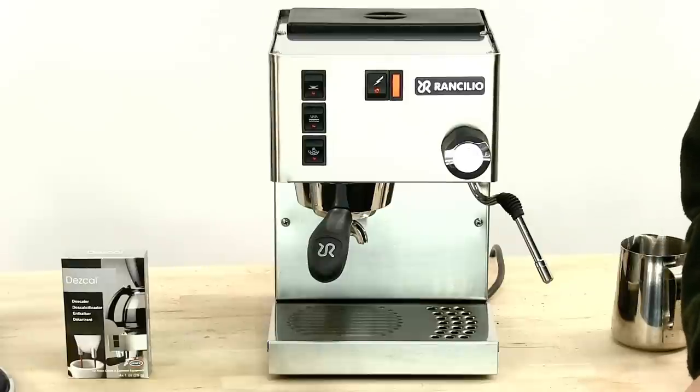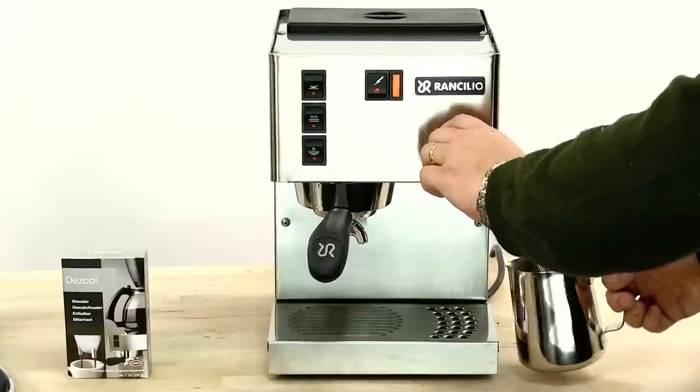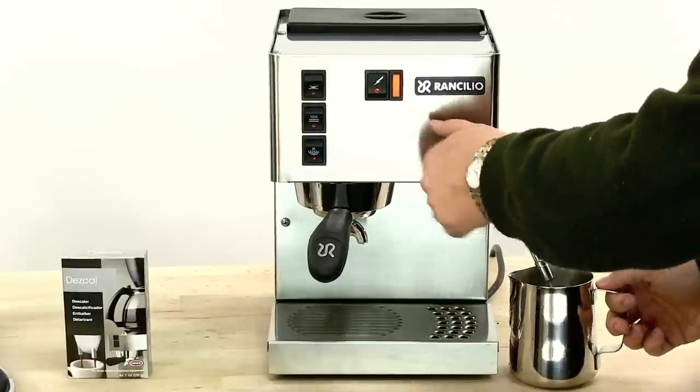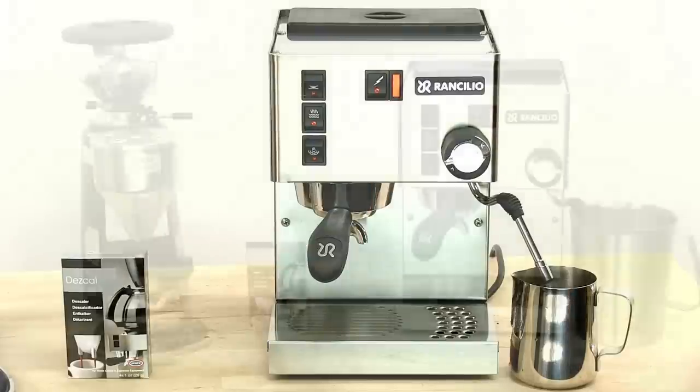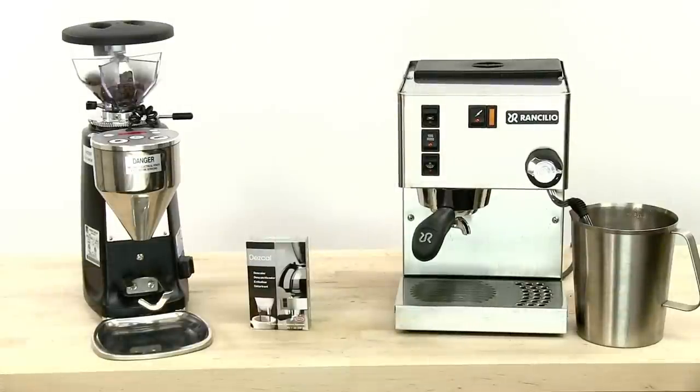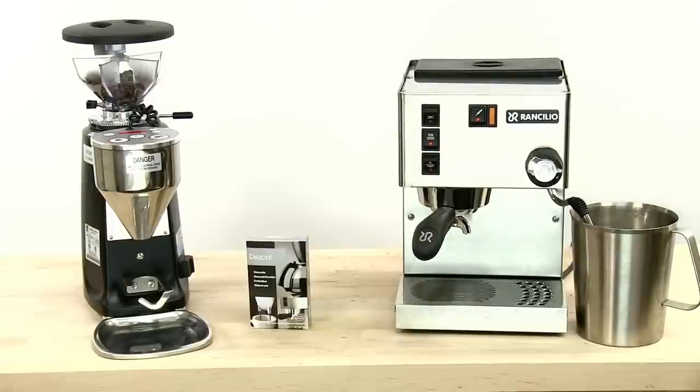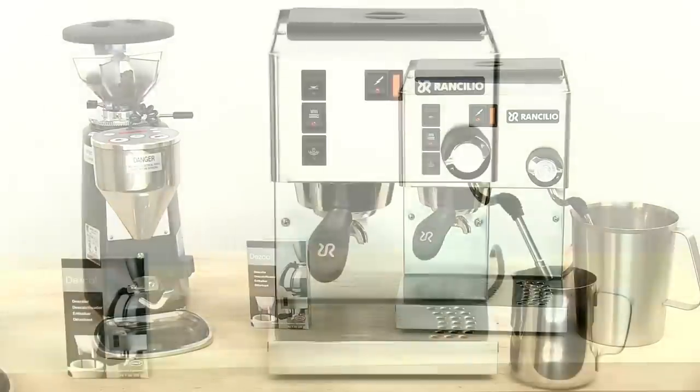If your machine doesn't have that, then just do it through the group. So I'm just going to open my valve here and turn on my water button. The Rancilio has a 325 milliliter boiler so that's the amount of water that I'm going to displace, which is roughly about 12, 13 ounces of water.